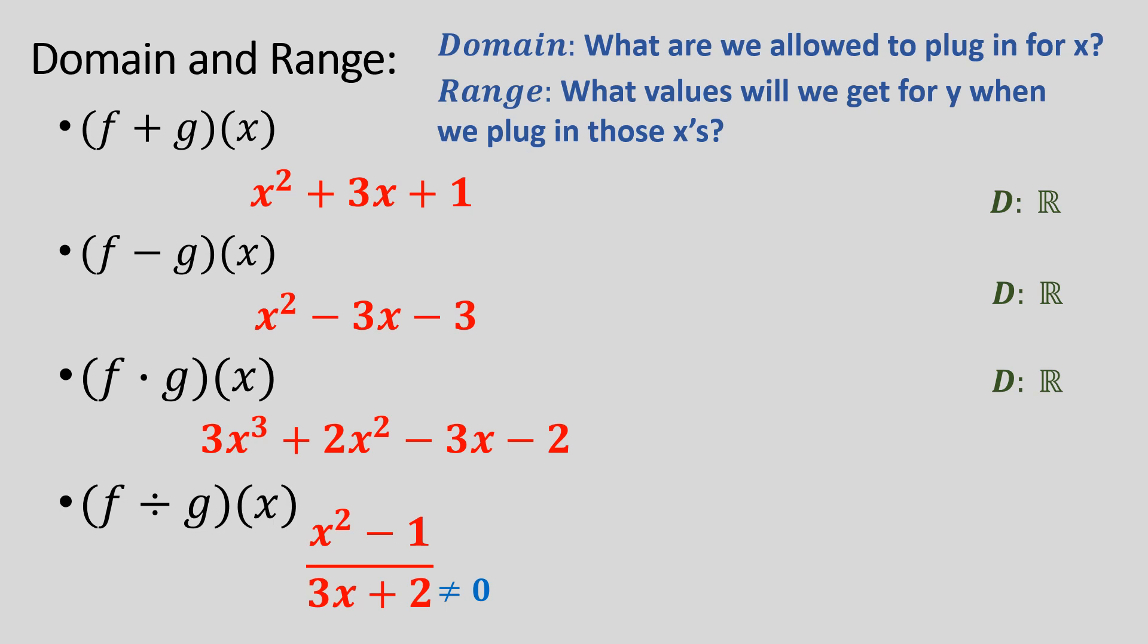So the domain would be whatever x equals when that denominator equals zero. We take the denominator, we set it not equal to zero, and we solve it out. And when we do that, we would get x is not equal to negative two thirds. Everything else is okay to plug in, but when we plug in negative two thirds for x, the denominator would equal zero, and that would give us an undefined error because we're not allowed to divide by zero.